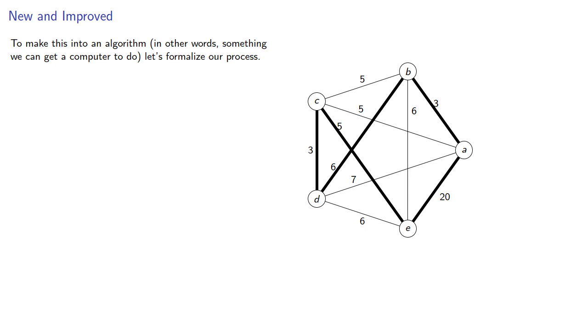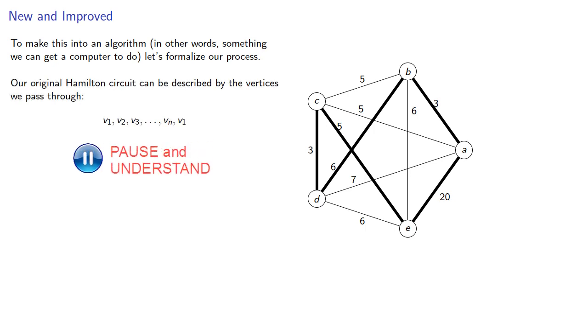To make this into an algorithm, in other words, something we can get a computer to do faster, cheaper and more accurately, let's formalize our process. Our original Hamilton circuit can be described by the vertices we pass through. Since we're assuming we have a complete graph, we'll have an edge between any two vertices.